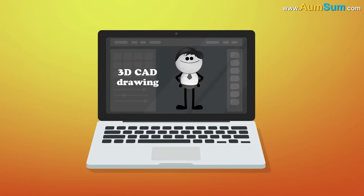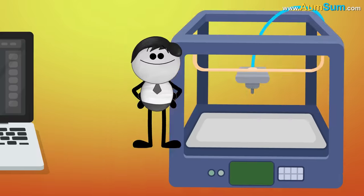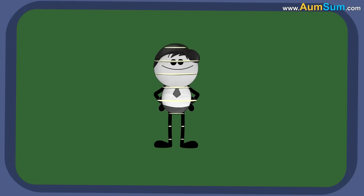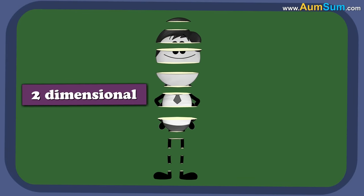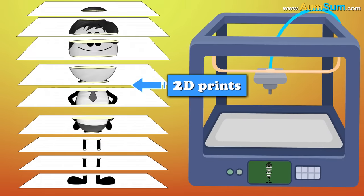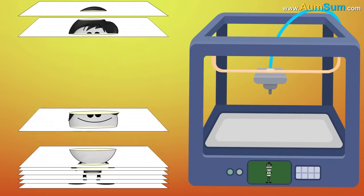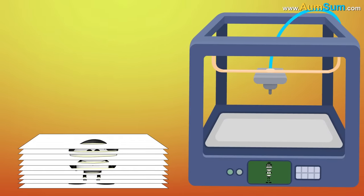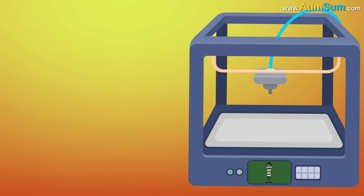First, a 3D CAD drawing is fed to the printer. The 3D printer divides the 3D drawing into two dimensional, cross-sectional layers. These layers are basically like separate 2D prints which sit on the top of one another. The only difference is that there is no paper in between.